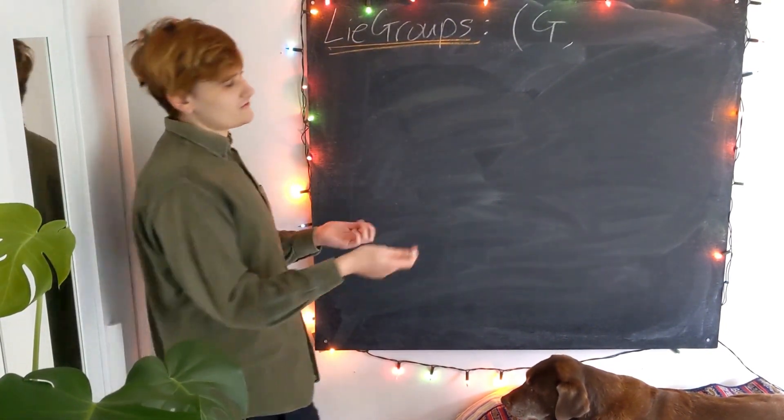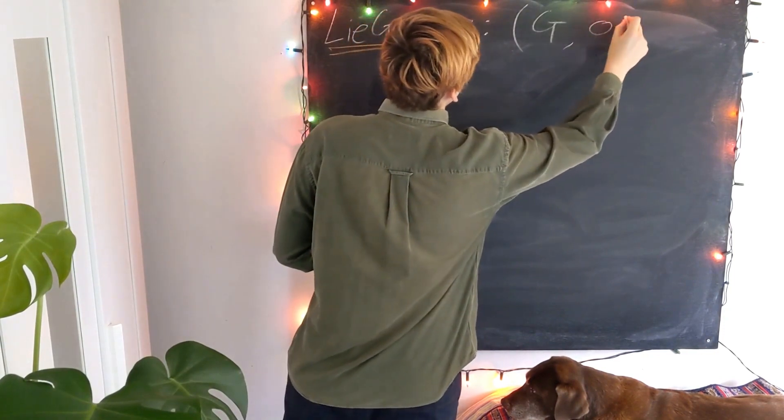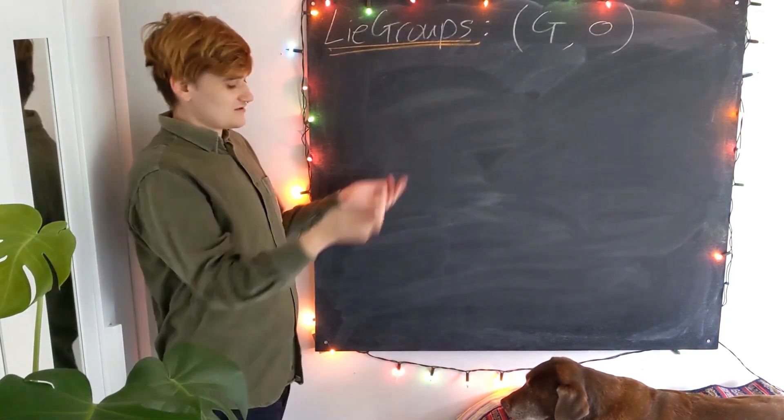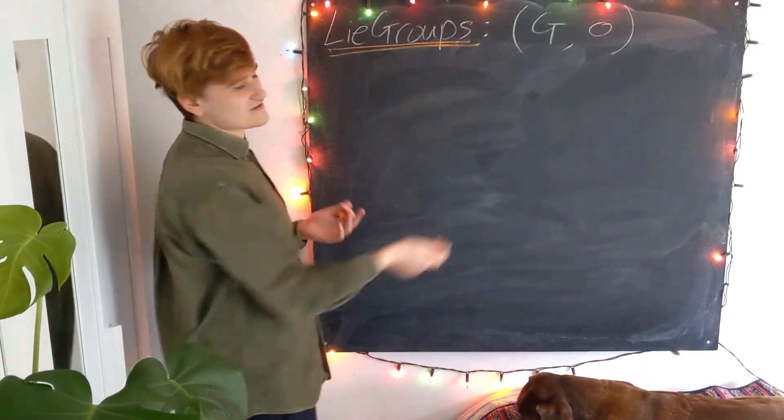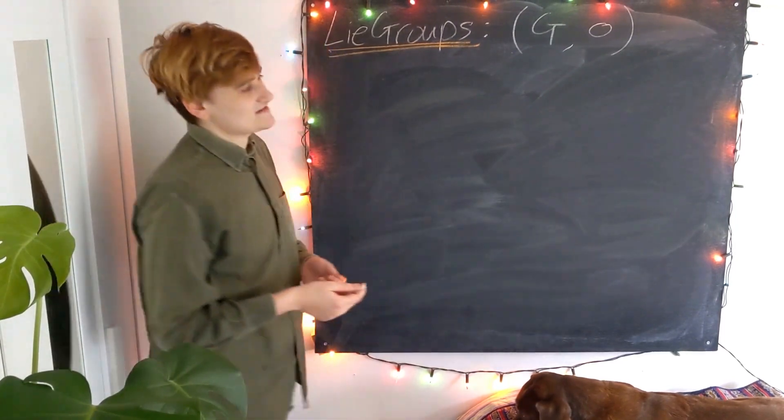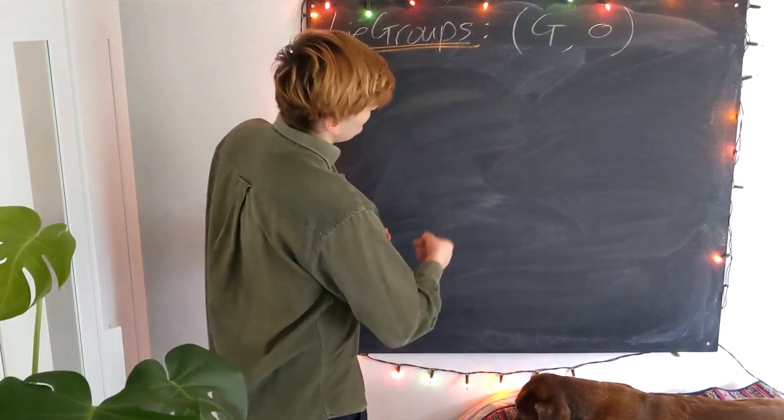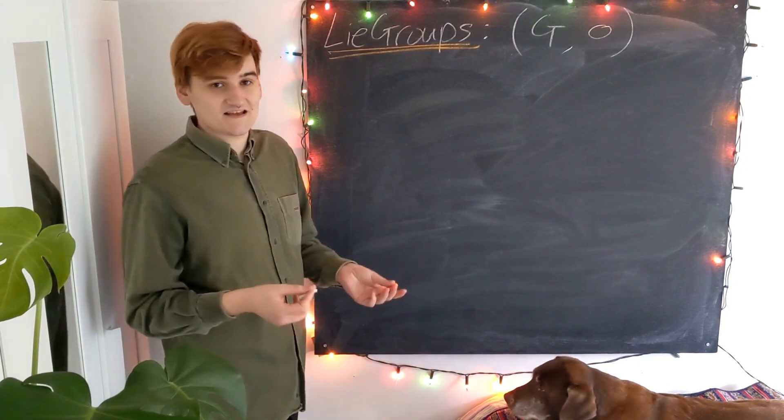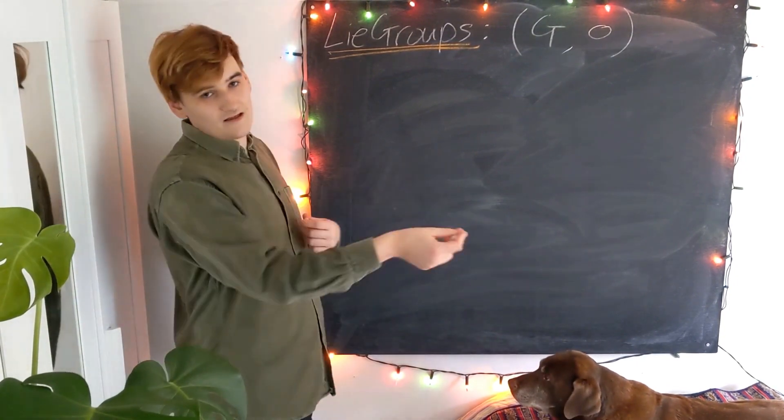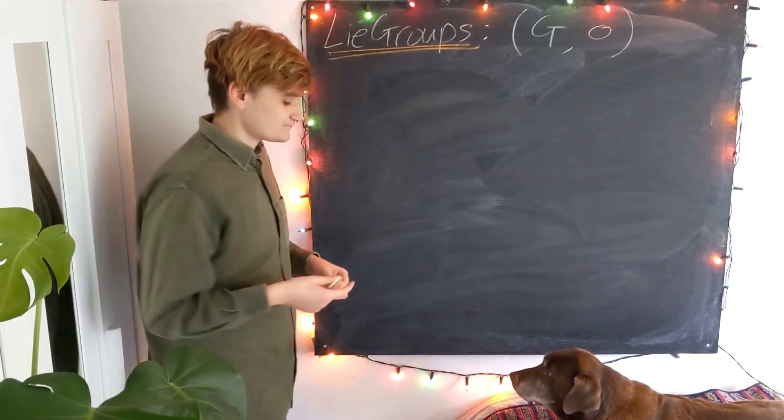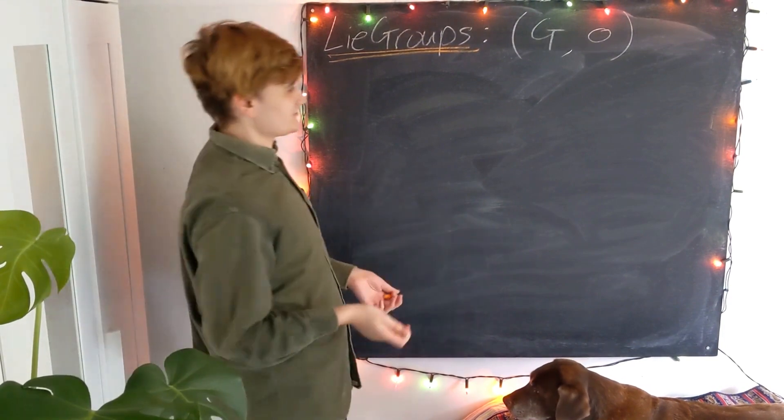But what makes the group a group is the composition operation, which we have to define between all the elements of the group, and it has to satisfy closure, and there has to be an identity, and you have to be able to invert the transformation. OK, so that was a standard group.